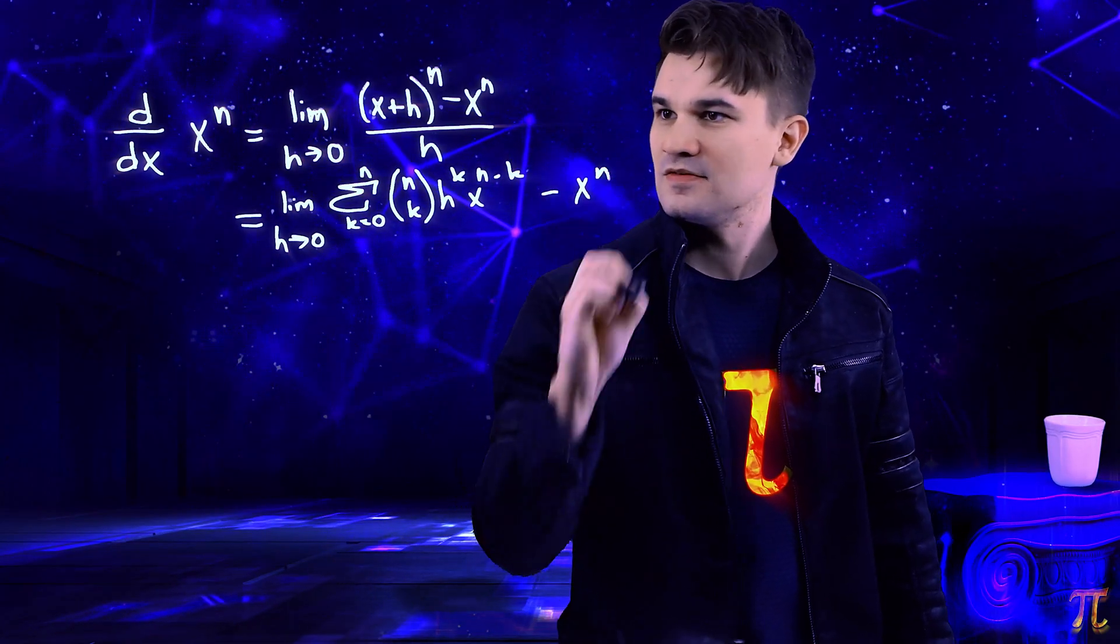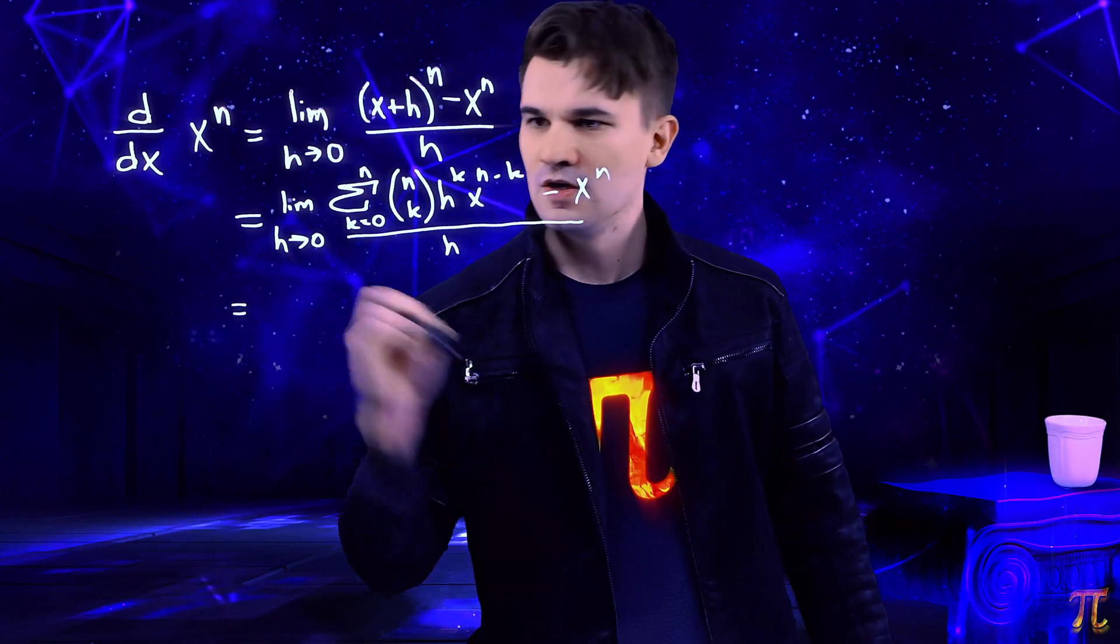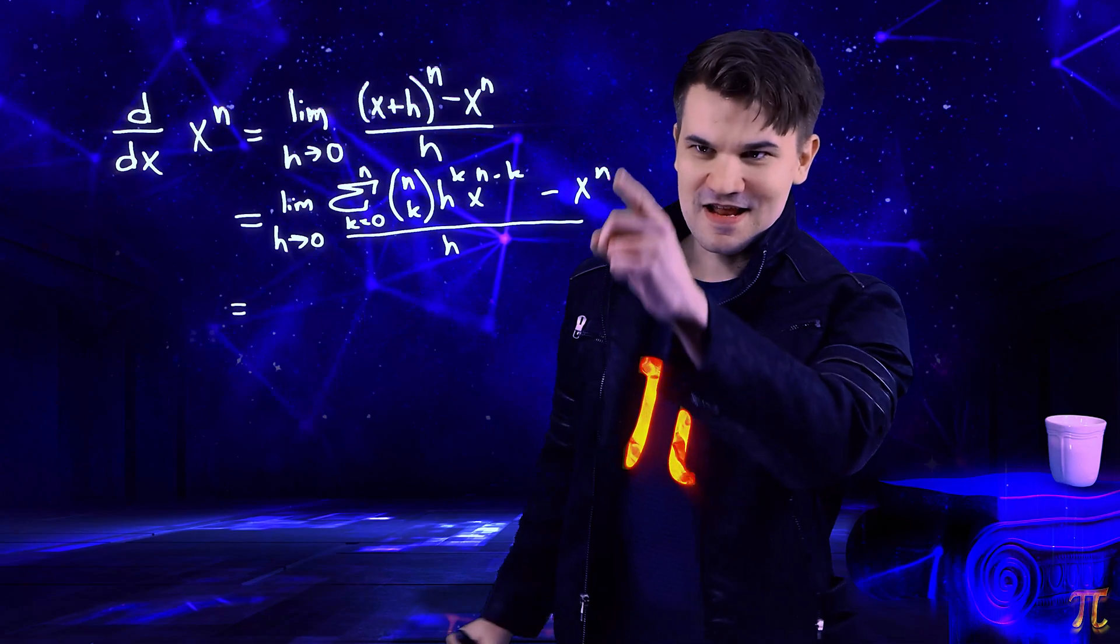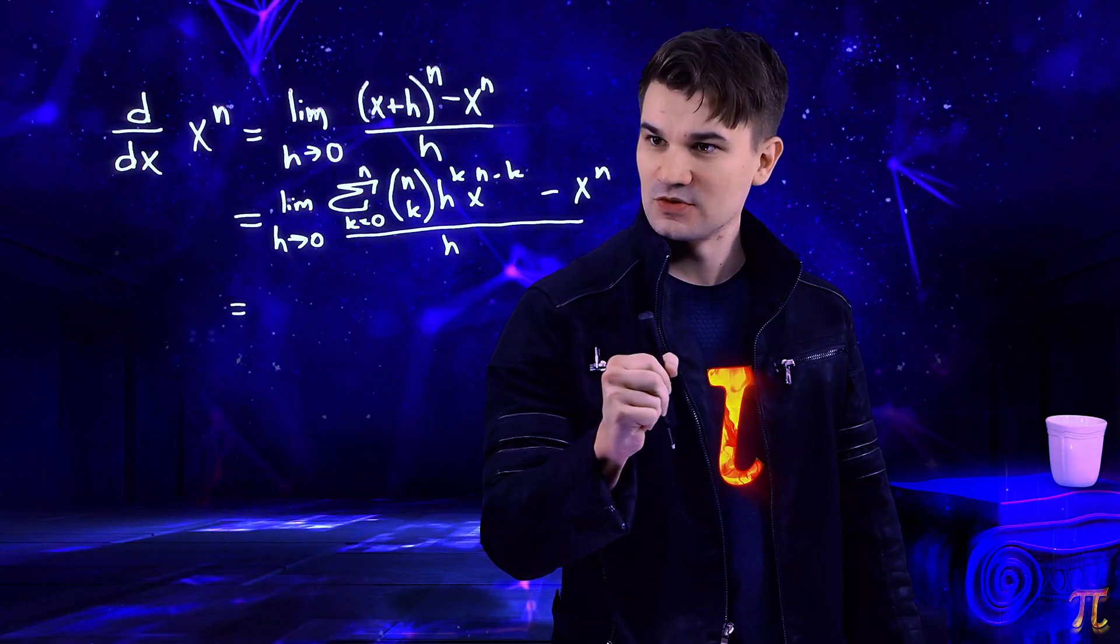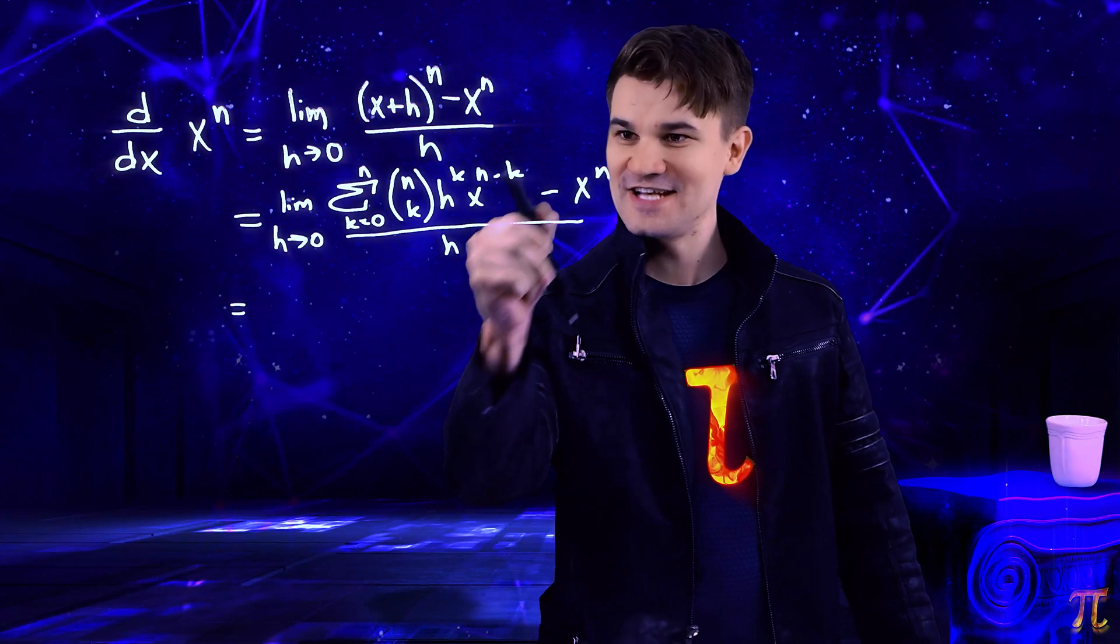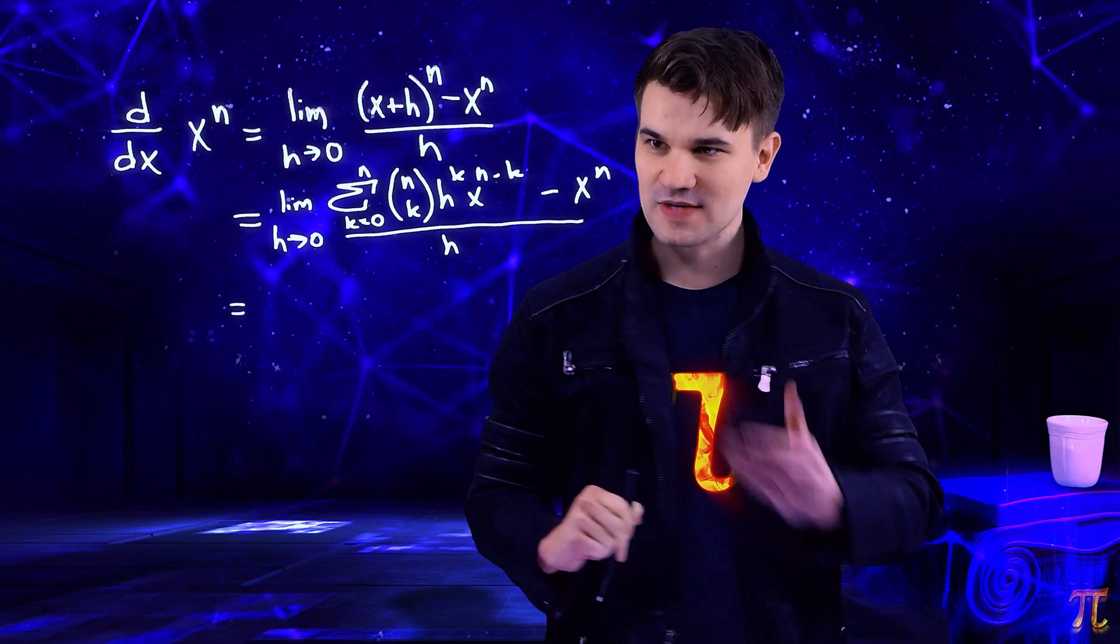And then we have minus x to the n, dividing by h. Now this sum has an x to the n term in it that occurs whenever k is equal to zero, because we have h to the zero and then x to the n minus zero, so x to the n.